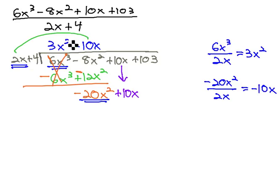We will then distribute this negative 10x onto the divisor as we multiply. Negative 10x times 2x is negative 20x squared. Negative 10x times 4 is negative 40x.